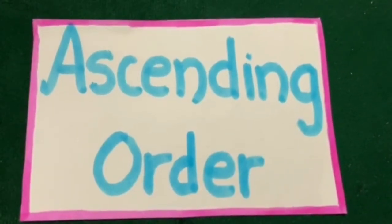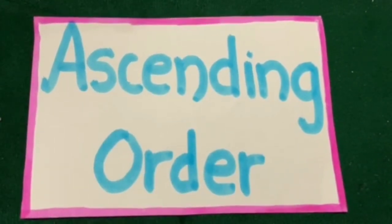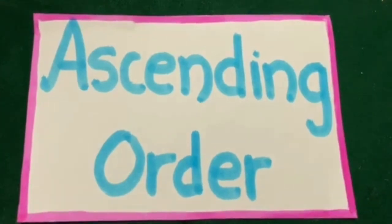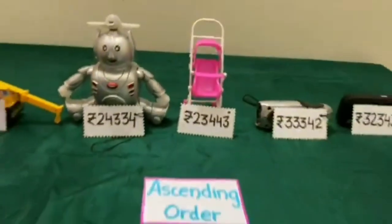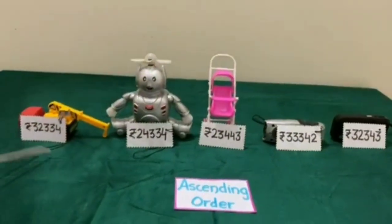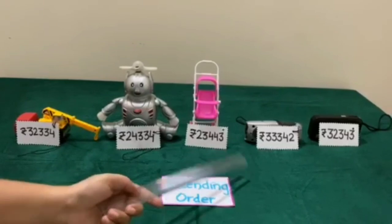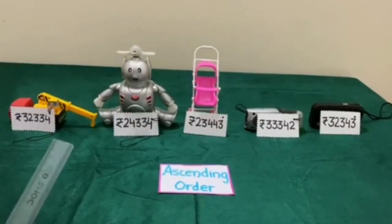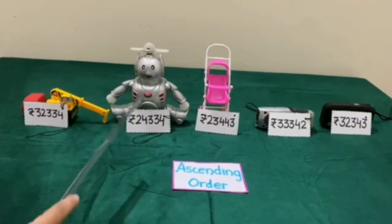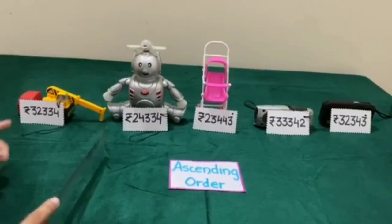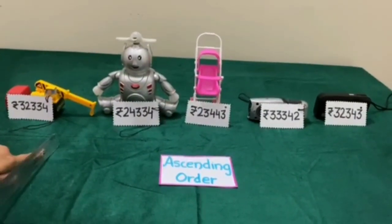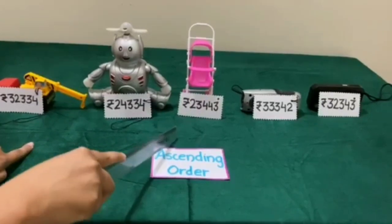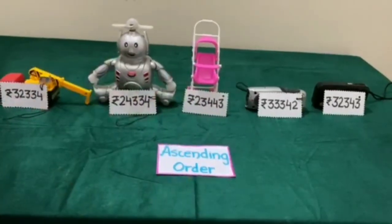Hello students, today we will learn to arrange numbers in ascending order. We have a few things with price tags, and we will arrange these things in ascending order. In ascending order, the first will be the lowest price, then greater than it, greater than it, and at last the greatest price.